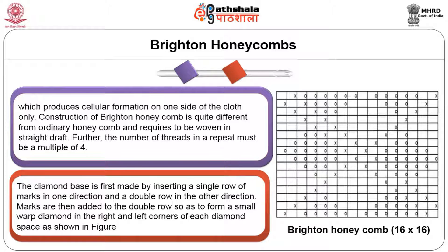As shown in figure 13, it is a 16-thread Brighton honeycomb. The prominent diagonal marks are created by introducing cross marks from left to right, followed by double cross lines from right to left, and additional marks are added to produce the diamond shapes. There are 3 to 4 diamond shapes in all, and this is the single-sided effect that is produced in the Brighton honeycomb.